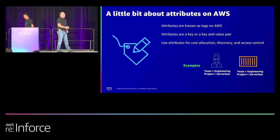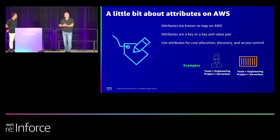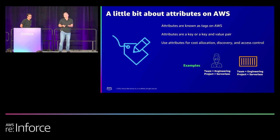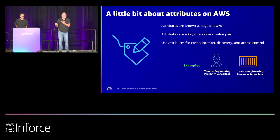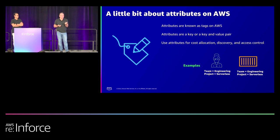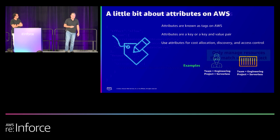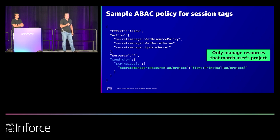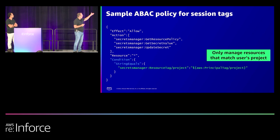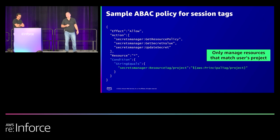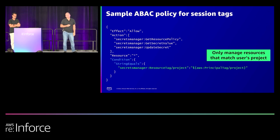Attributes in AWS are what we refer to as tags — key-value pairs that you assign to resources, and also to users in Identity Center. Tags are typically used for cost attribution and discovery, but they can also be used for access control. For example, in a Secrets Manager policy, you can specify that the resource tag 'project' and the principal tag 'project' must match in order for that user to have full access to Secrets Manager for that account.